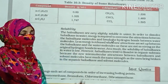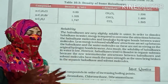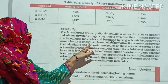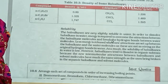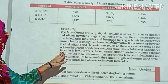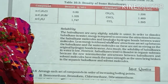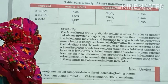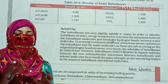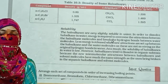Haloalkanes are very slightly soluble in water. In order to dissolve haloalkanes in water, energy is required to overcome the attraction between the particles and to break the hydrogen bonds between the water molecules. Less energy is released when new attractions are set up between haloalkanes and the original hydrogen bonds in the water. As a result, the solubility of haloalkanes in water is low. However, haloalkanes tend to dissolve in organic solvents because of new intermolecular attractions between haloalkanes and solvent molecules.